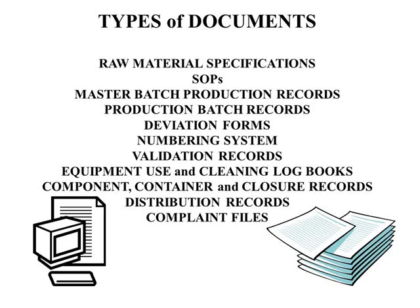The second type is procedure documents. These documents illustrate every step in the process. The third and last type is records and reports. Records and reports contain the data collected during every step in the manufacturing process. They are kept after the expiration date by two to five years, so they can be referred to in case of errors or adulteration.